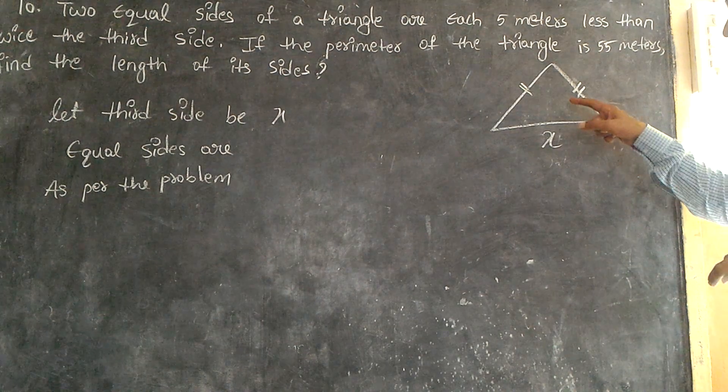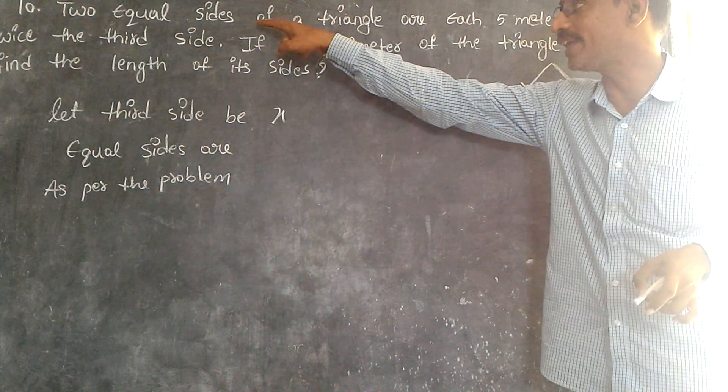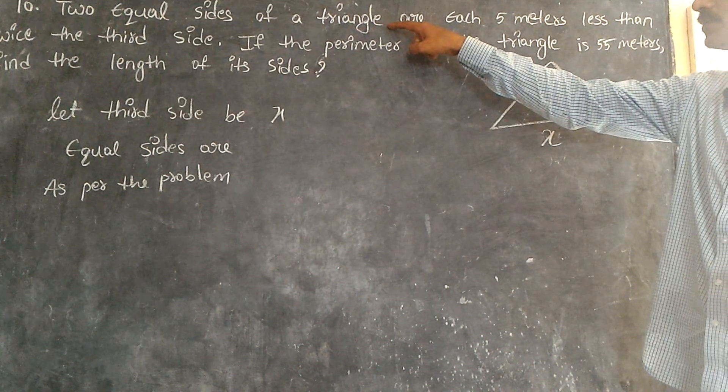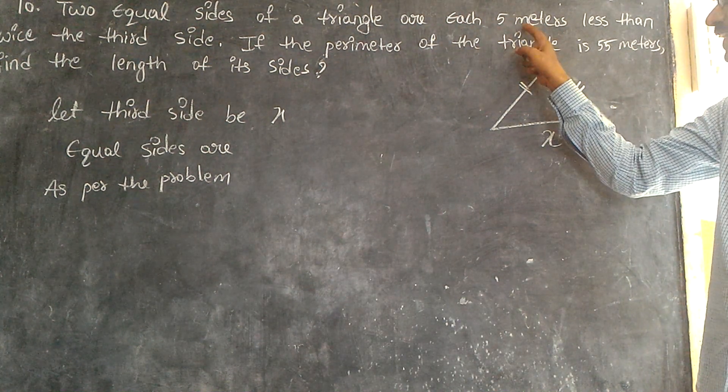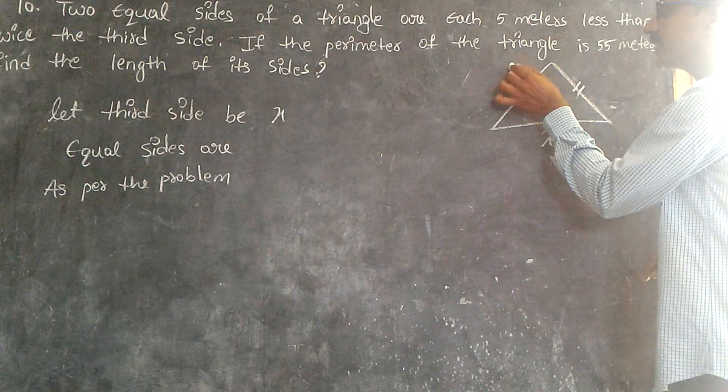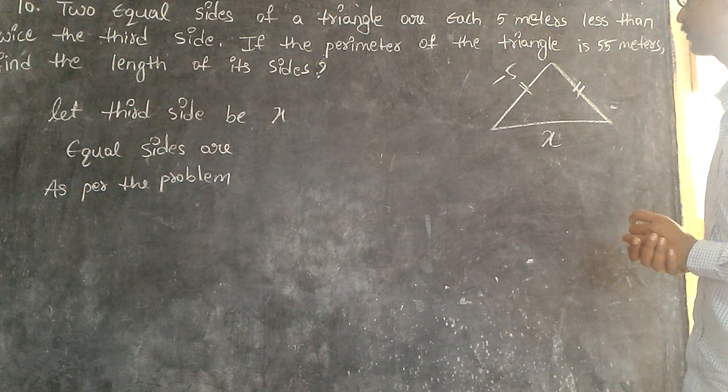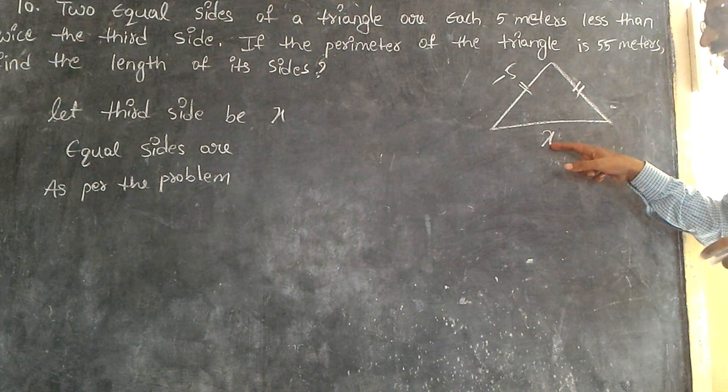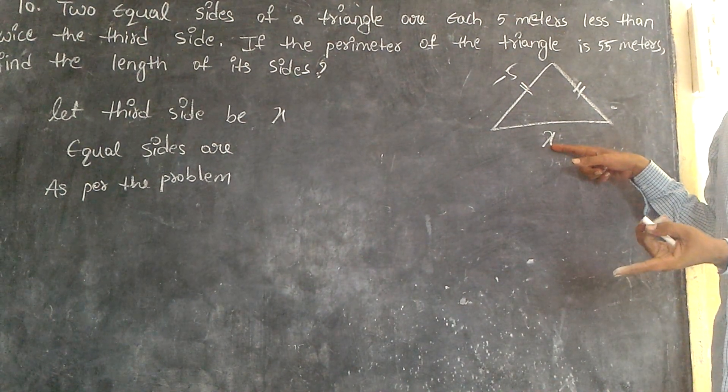Then the two equal sides of a triangle are 5 centimeters less - 5 centimeters less means what? Minus. Twice the third side. Twice means what?